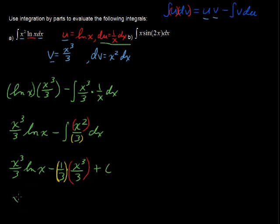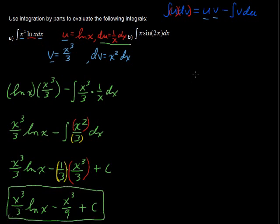So in the end we get x to the third over 3 natural log of x minus x to the third over 9 plus c. Excellent. So we've used integration by parts. And you should be asking yourself, why did you take natural log of x for u?